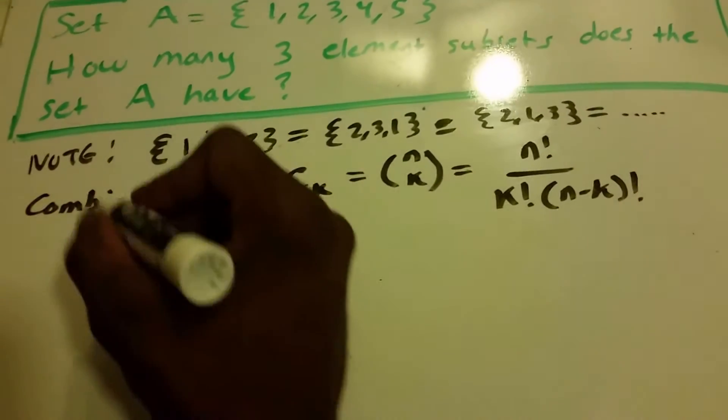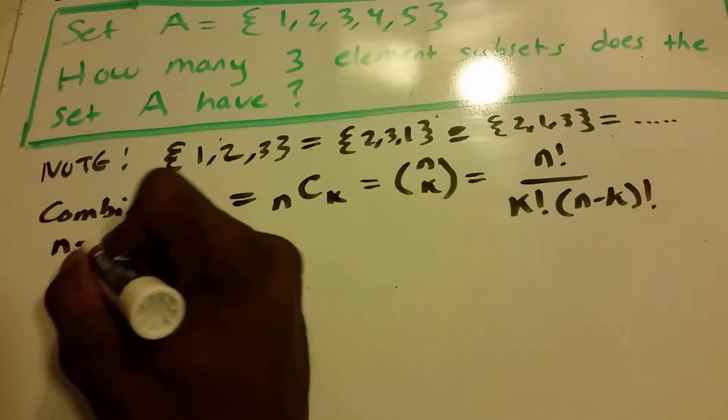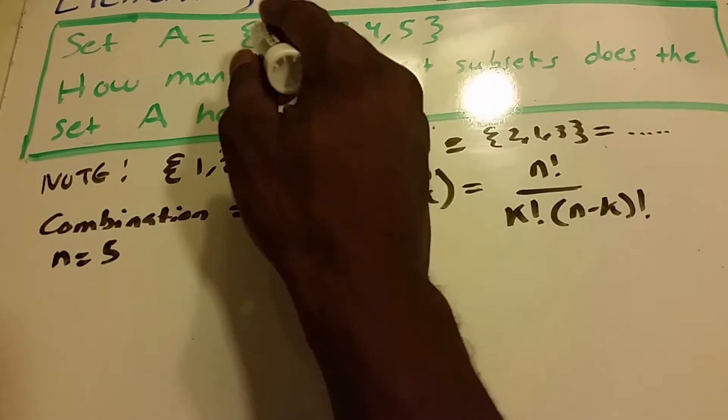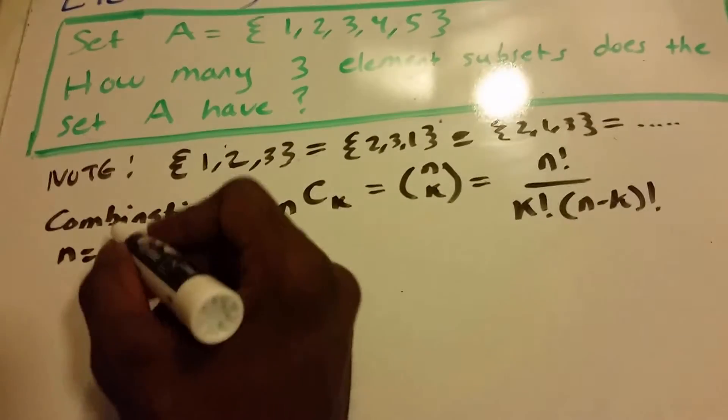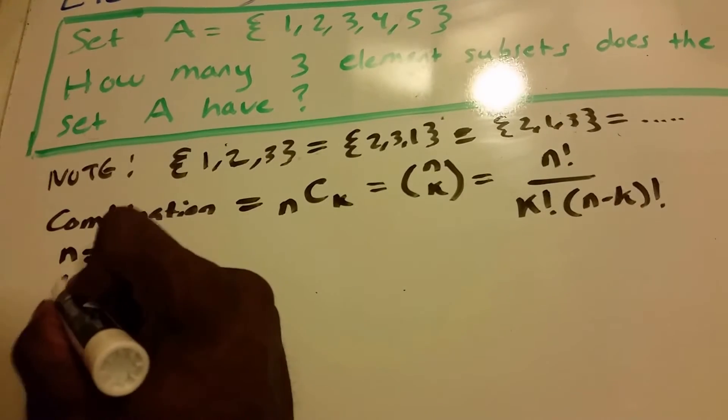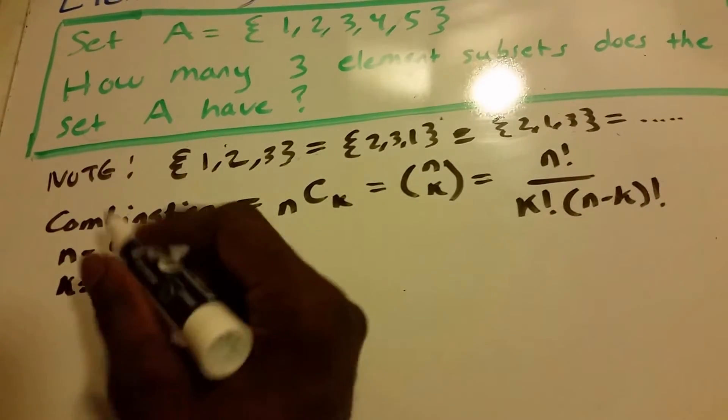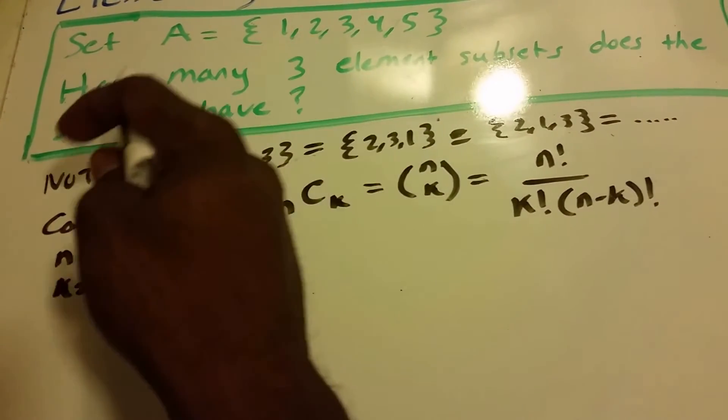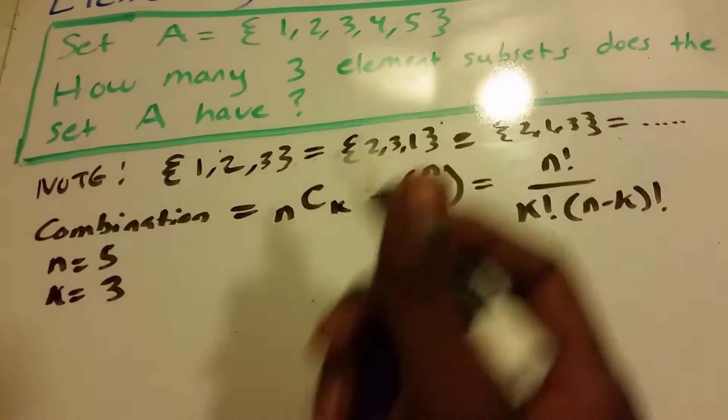So what is our n value? Our n is equal to 5, because we have 5 elements in this set: 1, 2, 3, 4, and 5. And our k value is 3, because we want to know the number of 3 element subsets.